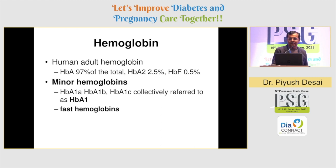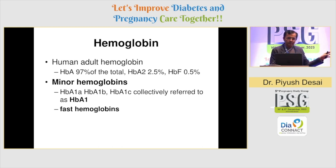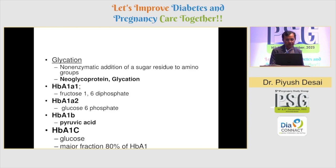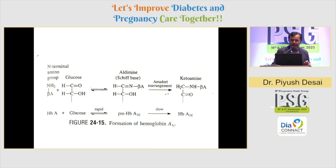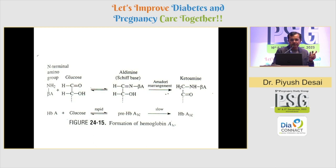Although 97% of total hemoglobin is HbA, with HbA2 and HbF comprising smaller proportions, when glucose is added to hemoglobin through a non-enzymatic glycation process, it forms HbA1A1, HbA1A2, HbA1B, and HbA1C. Out of these, HbA1C constitutes 80% of the total proportion. It is the glucose that binds to the N-terminal of the beta chain, forming a pre-HbA1C, which through Amadori rearrangement becomes a ketimine — that is HbA1C.